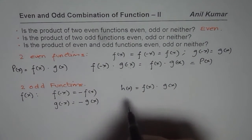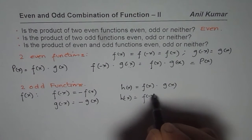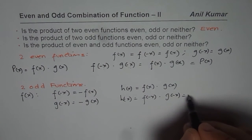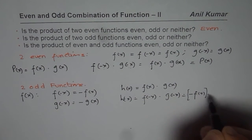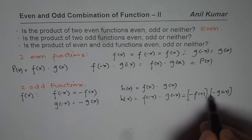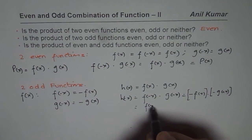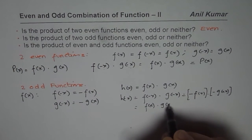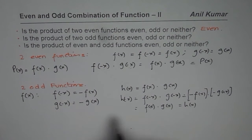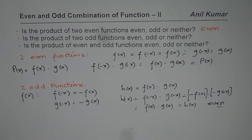What is h of minus x? We replace x with minus x, so it becomes f of minus x times g of minus x. Since f of minus x equals minus f of x and g of minus x equals minus g of x, we get minus f of x times minus g of x. Minus times minus becomes positive, so we get f of x times g of x. Since h of minus x equals h of x, we conclude that the product of two odd functions is even.